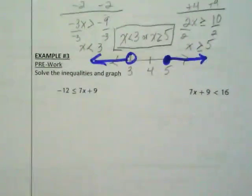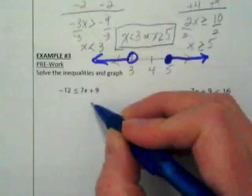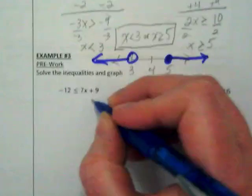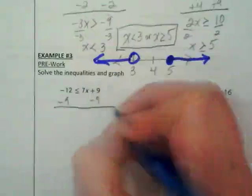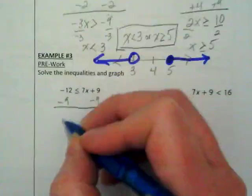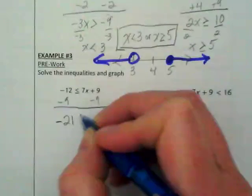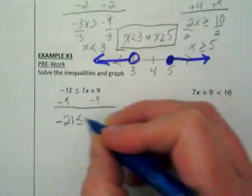So we're going to solve these inequalities and graph. Go ahead and we're going to subtract what first from the first one? What's our first subtraction? The 9. Negative 12 and negative 9 is negative 21, less than or equal to 7x.